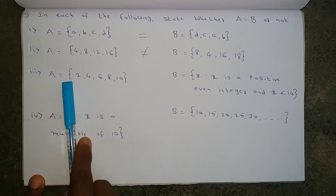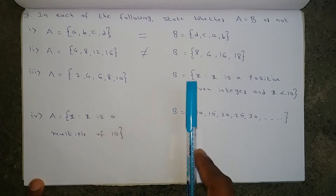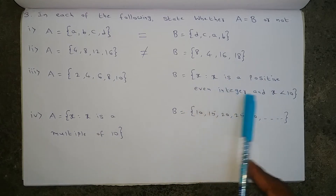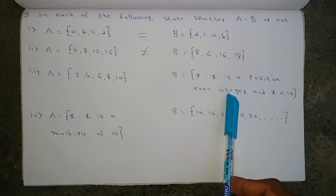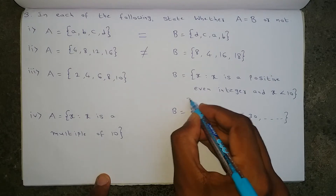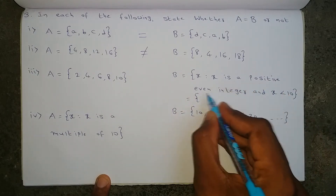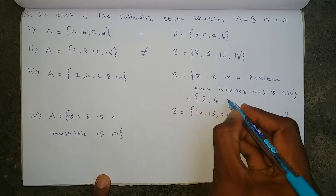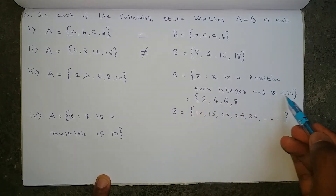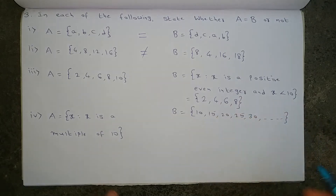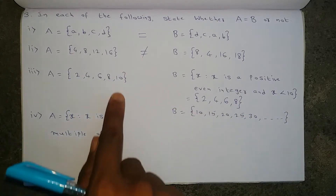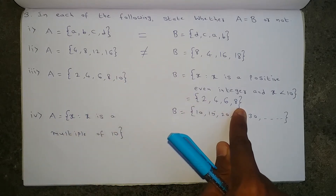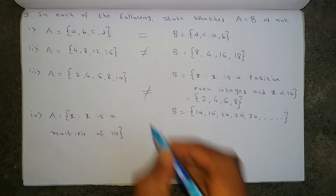Next, set A equals {2, 4, 6, 8, 10} and set B is X such that X is a positive even integer and X is less than 10. Set B is in set builder form. Converting to roster form: even numbers 2, 4, 6, 8 — since the condition is less than 10, ten should not be included. In set A, element 10 is there but in set B, element 10 is not there. So these two sets are not equal.